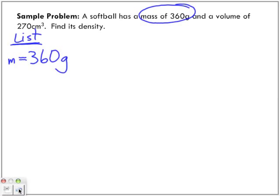Let's continue reading. And a volume of 270 centimeters cubed. So that is my volume, 270 centimeters cubed. Find its density. So the unknown is D. We're trying to find D.